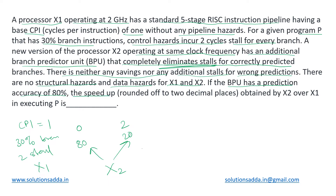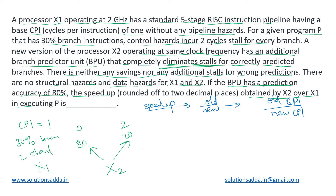We need to calculate the speed-up ratio obtained by X2 over X1. In general, the speed-up ratio is given as old execution time divided by new execution time. Since the clock cycle time is the same and the number of instructions is the same (it is the same program), the only thing changing is the CPI. So the speed-up ratio becomes CPI of the old system divided by CPI of the new system — that is, CPI of X1 divided by CPI of X2.